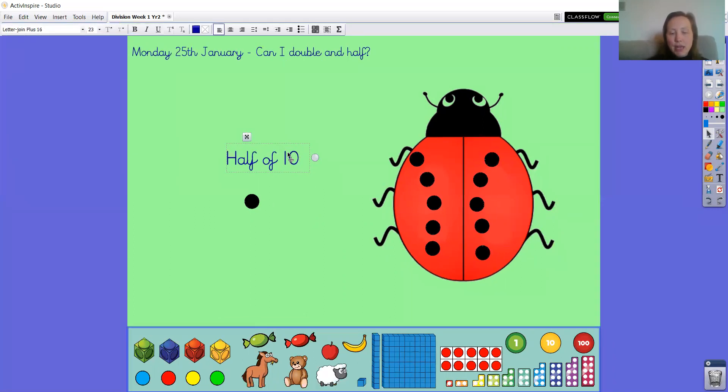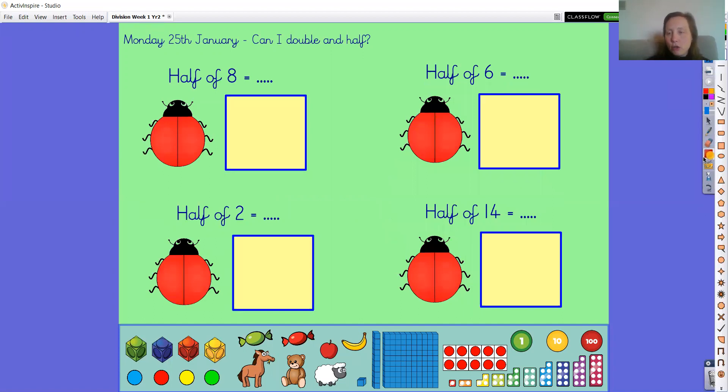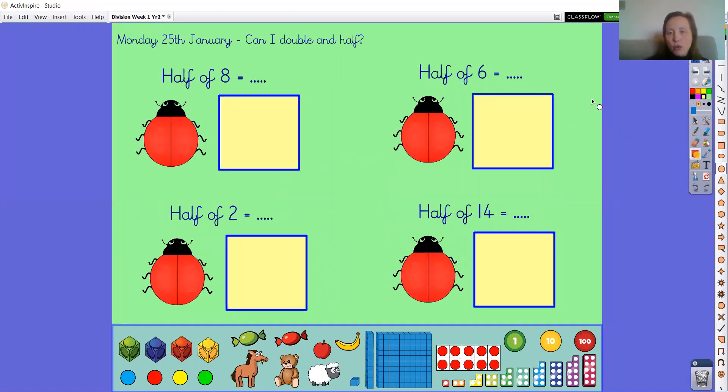So we have put our ten spots on. On this side she has got half her spots, so it's five spots. Half of ten equals five. You could use some ladybirds, or draw a quick circle and pop some counters or cheerios or raisins into them to help you. Can you work out what half of eight is, half of six, half of two, and half of fourteen?